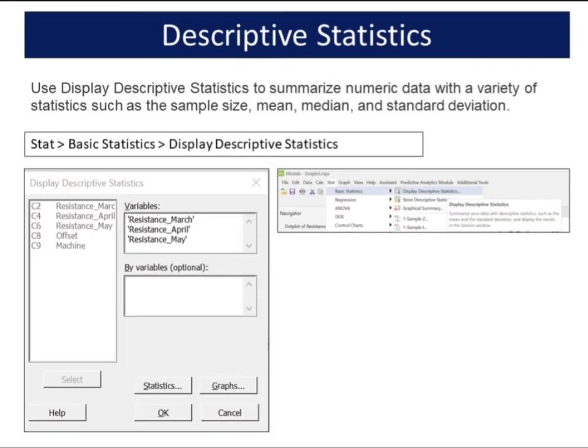Choose stat, basic statistics, display descriptive statistics. In variable, enter resistance March, resistance April, resistance May.